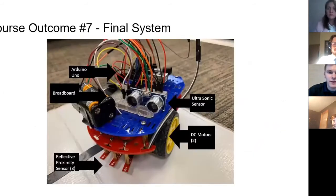And then looking at the final system, you can see we had the Arduino Uno in the back with the breadboard in front of it. Hidden behind that ultrasonic sensor is an H-bridge, and then we had two DC motors and three reflective proximity sensors. We didn't end up using that center reflective proximity sensor because it caused errors in our code.